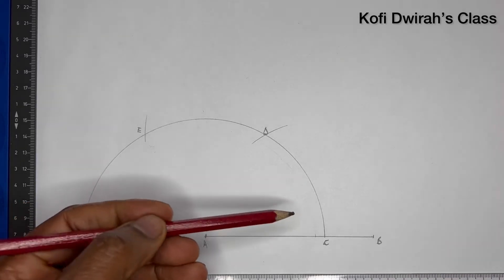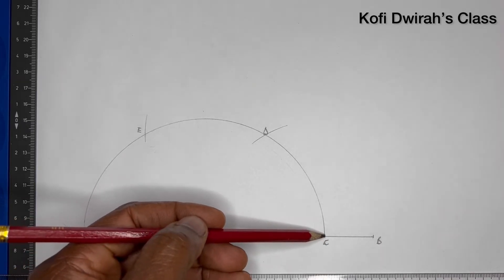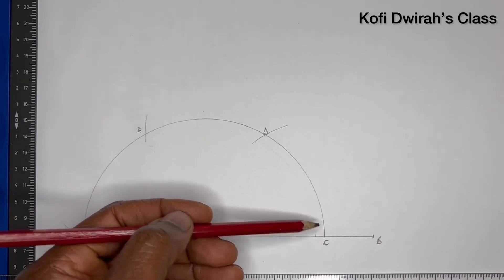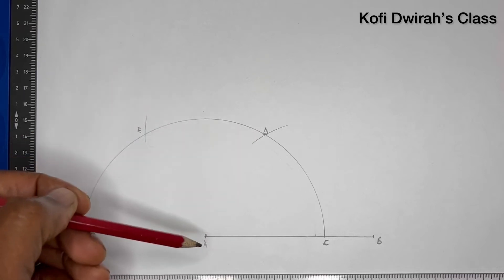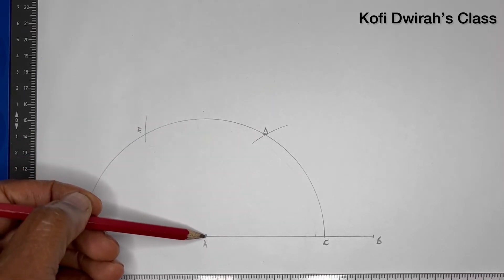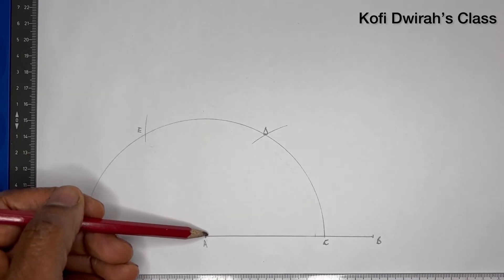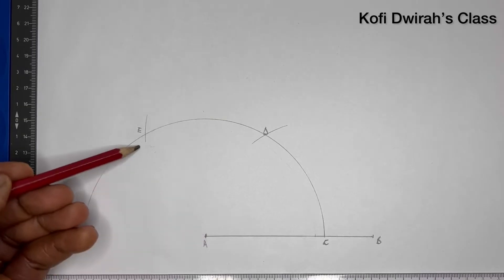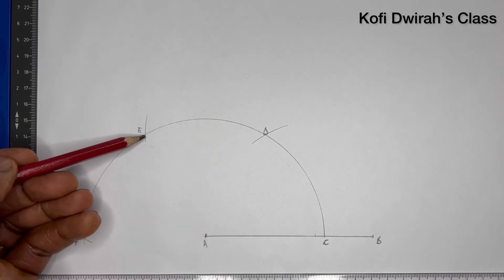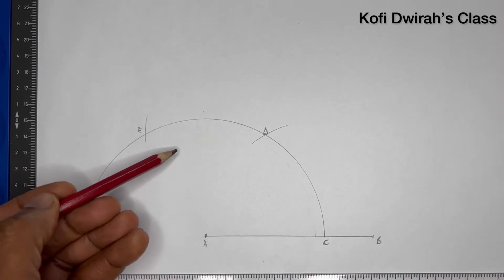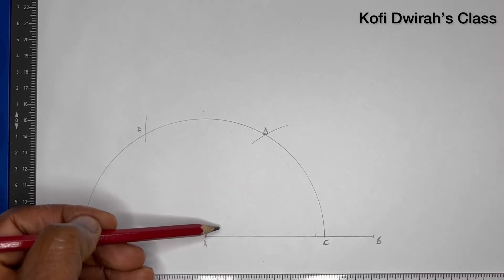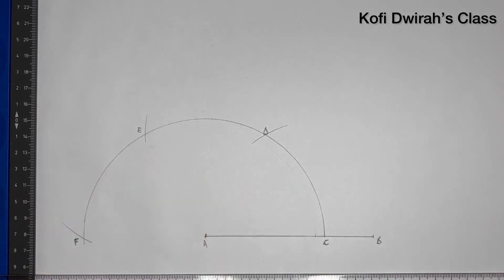Now, the angle from C to D — when you draw a straight line from A to D, the angle is 60 degrees. And when you draw a line from A to E, the angle here is 120 degrees. So we want a 150 degrees angle.